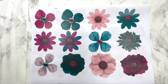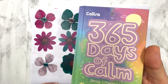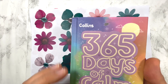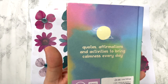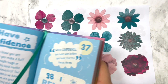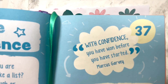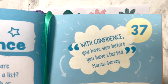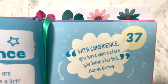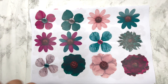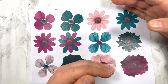Now let's finish the video on a positive note. This is '365 Days of Calm' — a little book of quotes, affirmations, and activities to bring calmness every day. Today is number 37 and it says: 'With confidence, you have won before you have started.' I always think that if you work hard and stay positive, you can achieve everything.